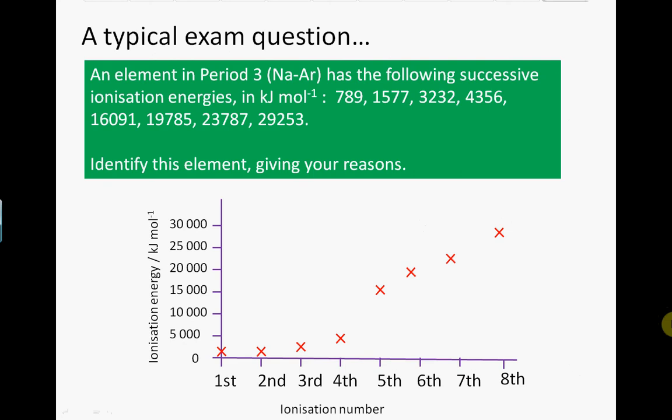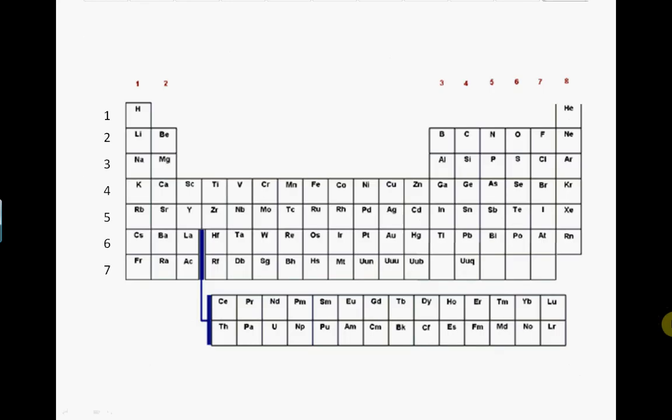Our graph shows that there are four electrons in the outer shell. Now let's look at the periodic table. We know that the element is in period three because it tells us that in the question. Now which element in period three has four electrons in the outer shell? It's very easy to work that out. The group number gives us the number of electrons in the outer shell. So our element has four electrons in the outer shell, and so it must be in group four in the periodic table. Therefore our element is silicon.